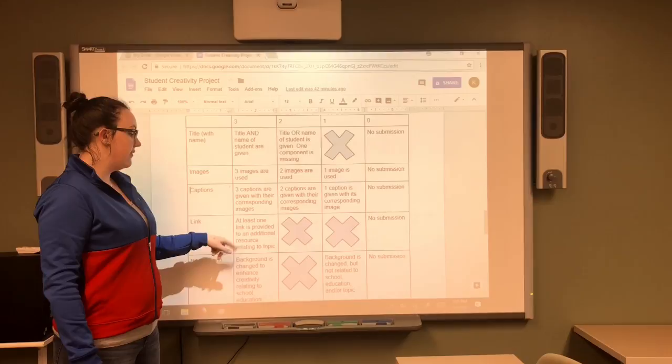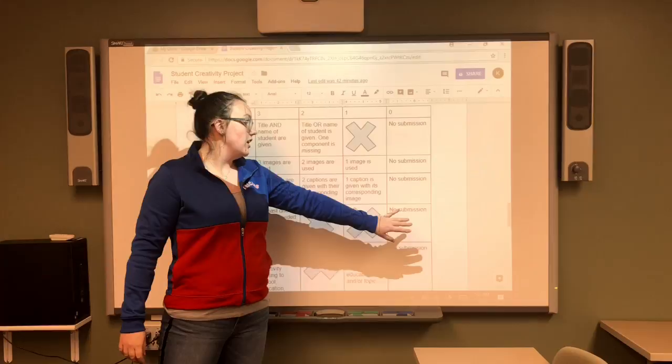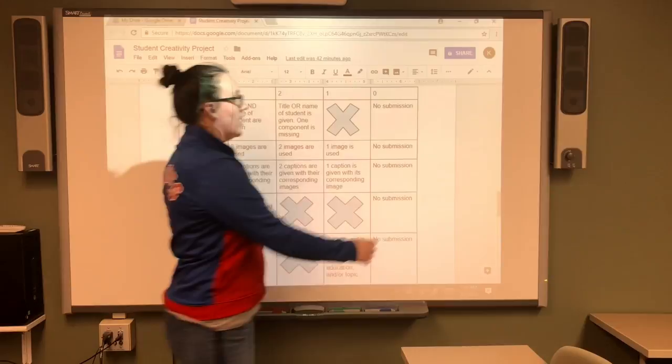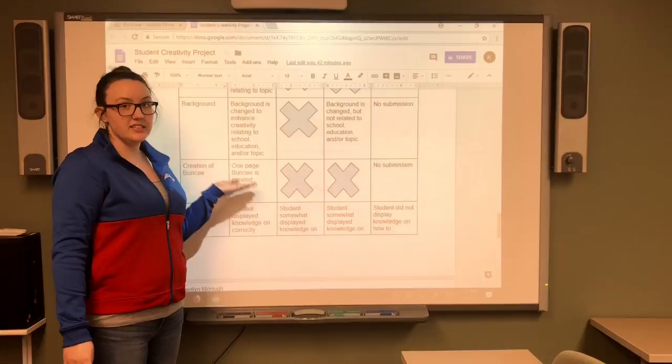I want everyone to notice that I have exits placed here. For example, with the link, at least one link is provided to an additional resource. It's either you have the link or it's not submitted. I just want to make sure for points two and points of one that you will not receive any points if the link is not present.